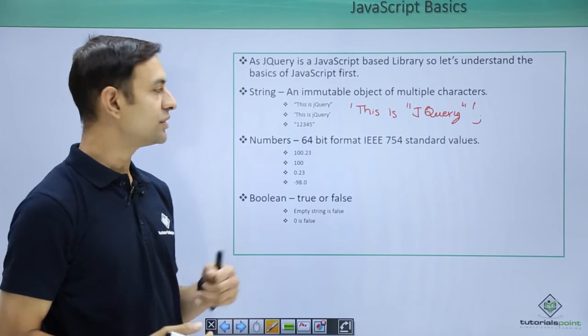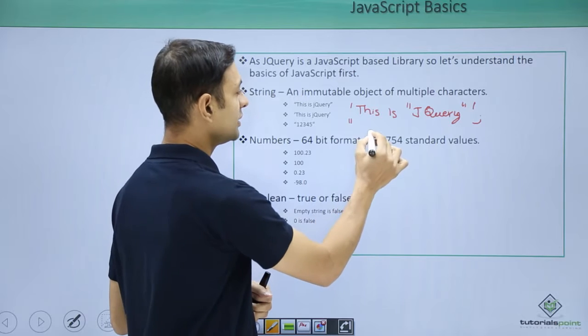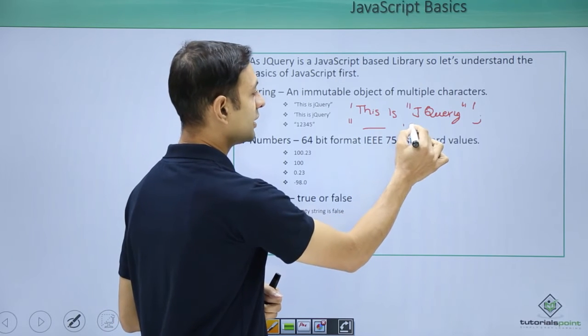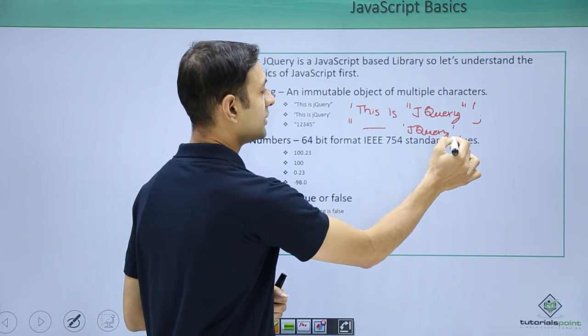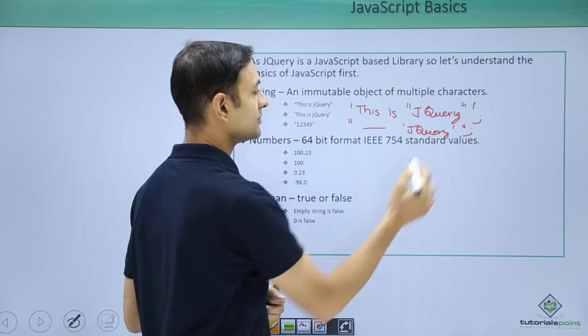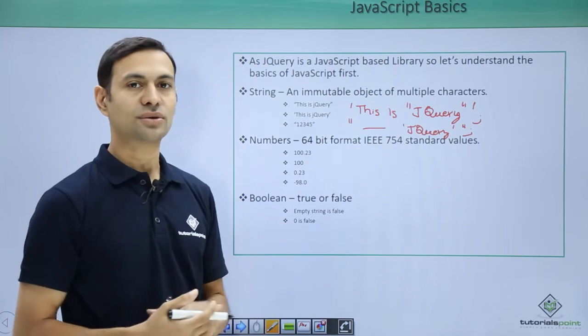In case I want single quote to be present in my string, then similarly I have double quotes here. My string, then single quote jQuery and single quote and double quote - and this is the way how we distinguish double quotes and single quotes.